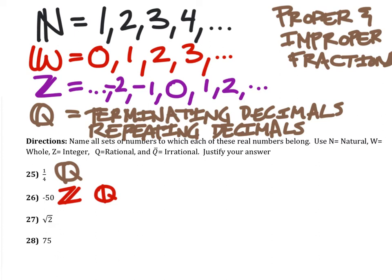The square root of 2, since this is a square root, the square root of perfect squares come out as natural, whole, integer, and rational. So this one we would consider irrational.